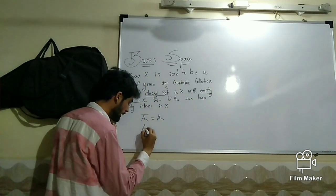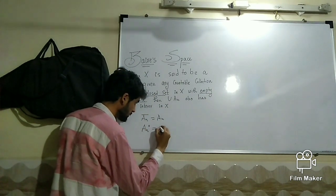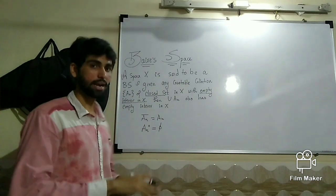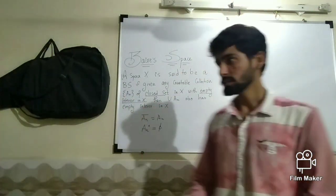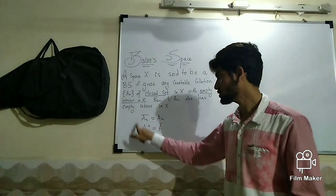That means AL interior is empty. If you take any countable collection such that each of them satisfy these two properties,